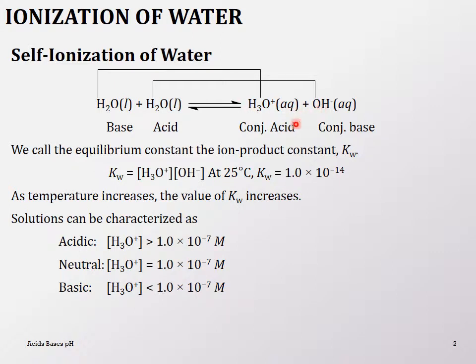We can calculate the equilibrium constant for this reaction, given by Kw — which is like Kc from equilibrium, but specific to water. Kw is still products over reactants, so the products are hydronium ion and hydroxide ion. The reactants are not included because water is in the liquid state, and we don't use liquids or solids in equilibrium constant calculations.